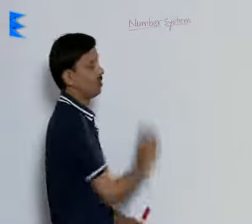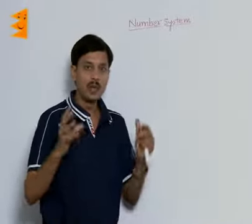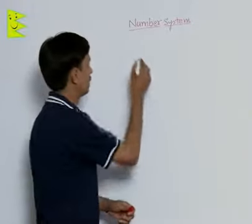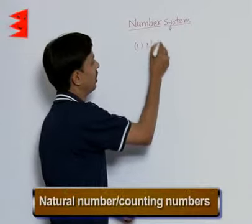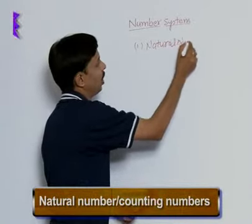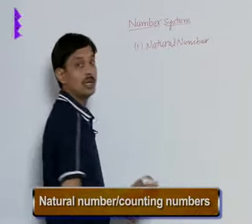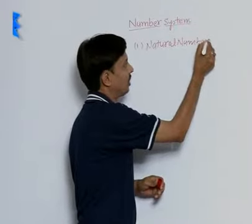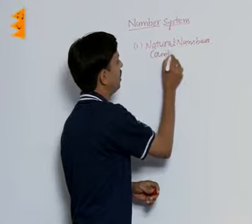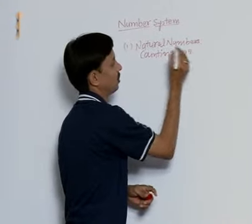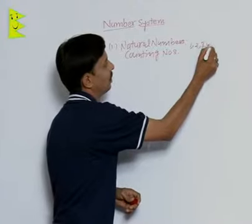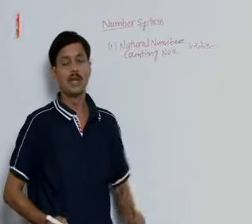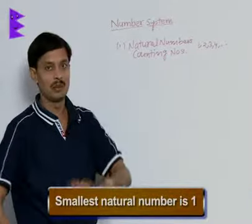So, if we talk about this chapter, this unit number system, we must know the first number, that is the natural number. What is the natural number? The another name of the natural number is the counting number. Natural numbers are said to be counting numbers — these are 1, 2, 3, 4... We have the smallest counting number 1. So, we can say the smallest natural number is 1.